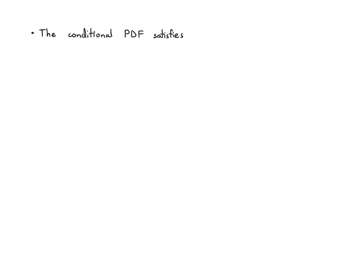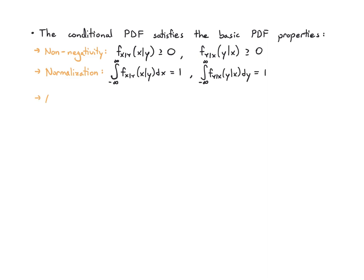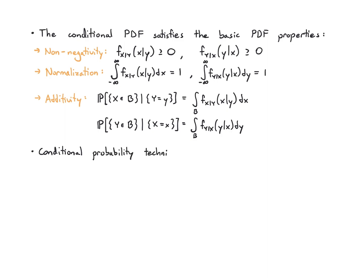So the conditional PDF has the same properties as a PDF. So same basic PDF properties. There's non-negativity, and so that means you can't be negative for either of these conditional PDFs. There's normalization, meaning that if I integrate out the variable that I'm using this to get the density of, I should get one. And notice that the integral does not involve the variable that I'm conditioning on. It only involves the variable that I'm interested in. I also have additivity, which means if I'm interested in the probability of falling into an event given that one of the random variables is fixed, I just integrate the corresponding conditional PDF over that event.